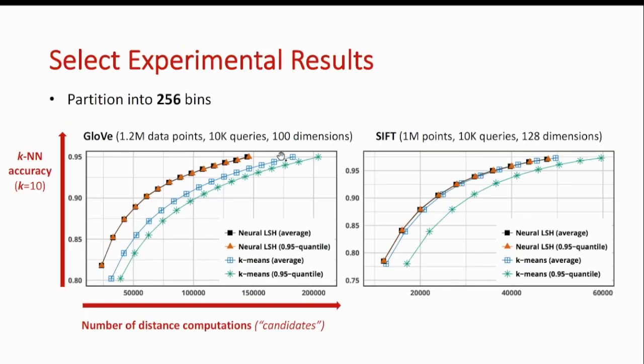Here are some experimental results on two standard benchmark datasets for nearest neighbor search. On the left, you see GLOVE, which is a dataset of word embeddings, and on the right, you see SIFT, which is a dataset of image descriptors. On the x-axis, we plot the number of distance computations we perform per query, which is the total number of points in the bins that we search, which we call candidate points, and this is a proxy for the runtime of the query. On the y-axis, we plot the k-nearest neighbor accuracy, so higher is better.